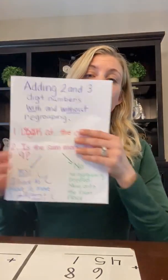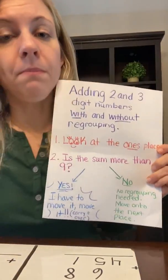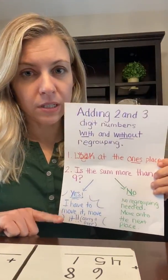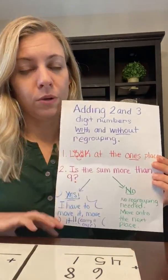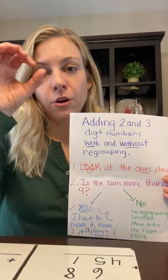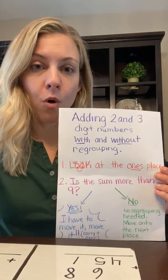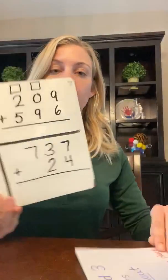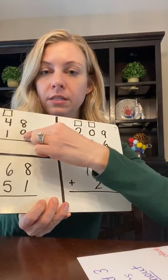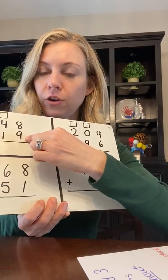Before we do those, I just want to go over with you and help you remember that the first step is always the same when we're adding two and three digit numbers. The first thing we always do is look at the ones. So you will always look at the ones place and do that place first before you move over to the tens or the hundreds.